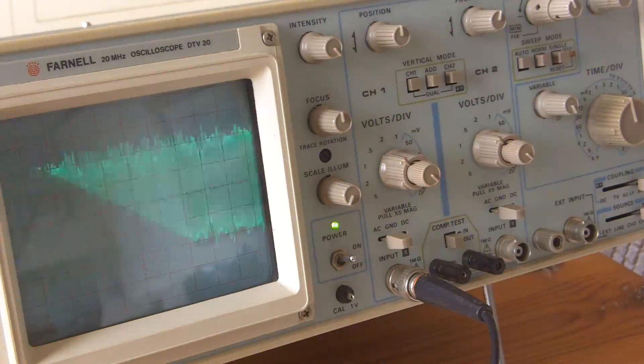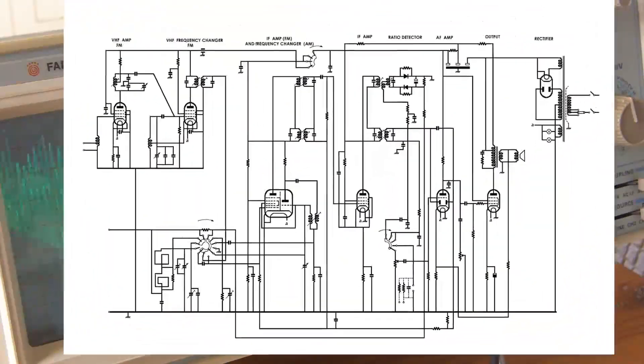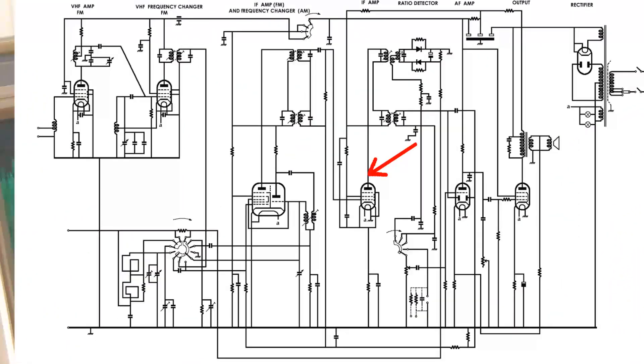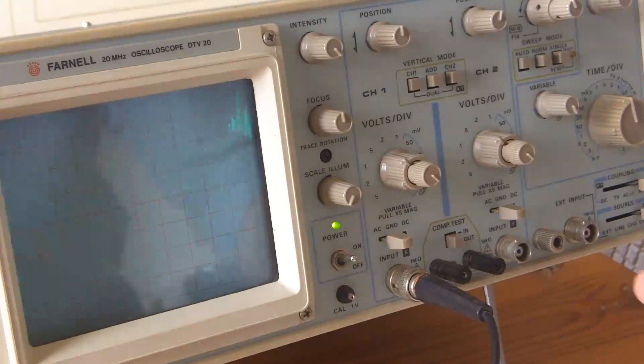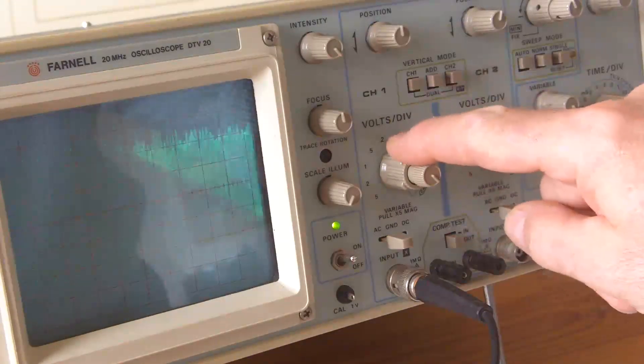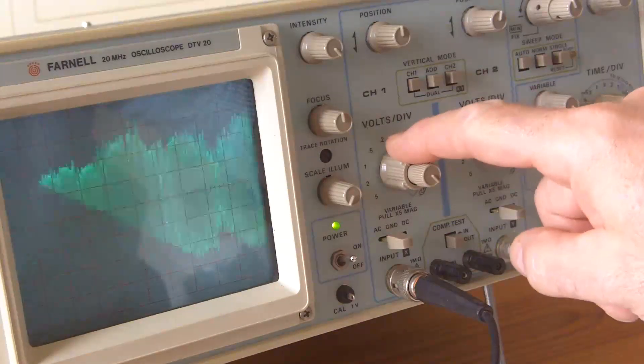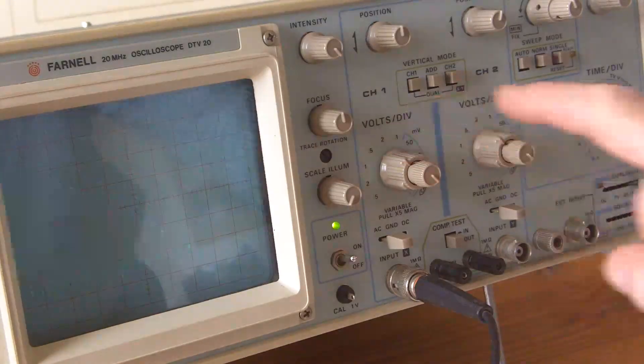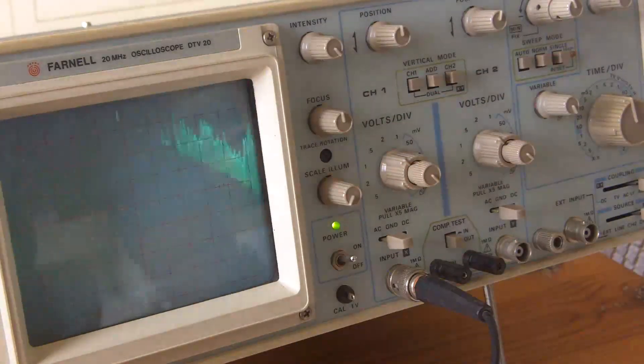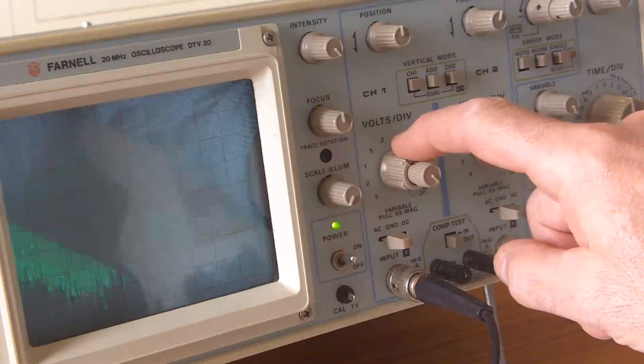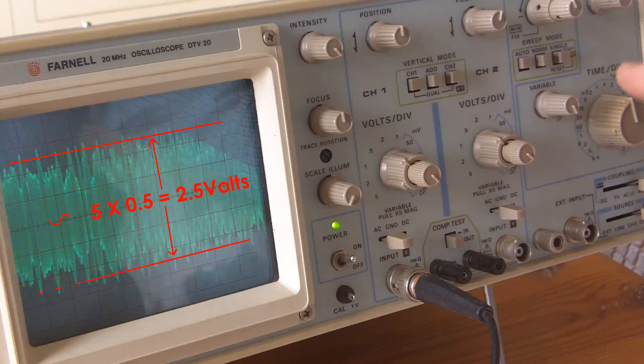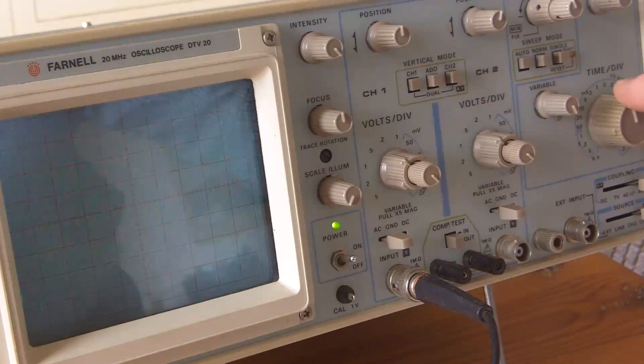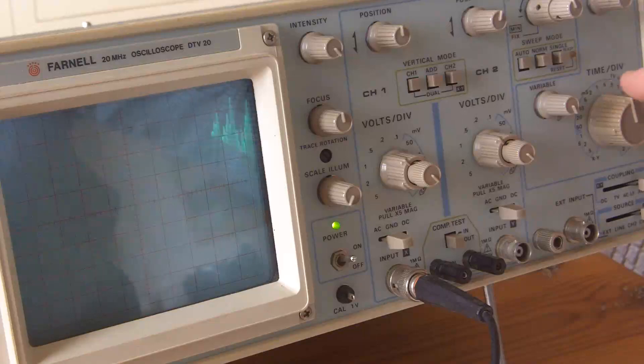This is the signal looking at the output of the IF amplifier. I thought it was worth showing you this. The voltage is set at 0.5 volts per division and the time base is 1 millisecond per division.